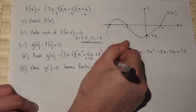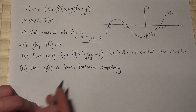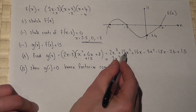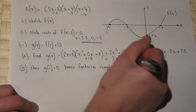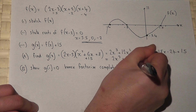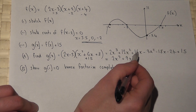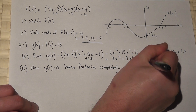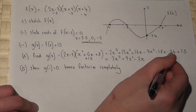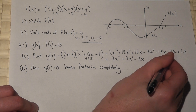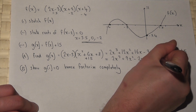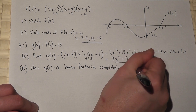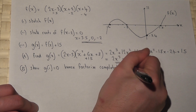I then need to simplify. I've got 2x cubed. 12x squared take 3x squared is 9x squared. 16x take 18x is minus 2x. And minus 24 plus 15 is minus 9. So I have therefore found g of x equals 2x cubed plus 9x squared minus 2x minus 9.